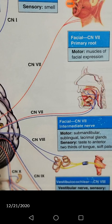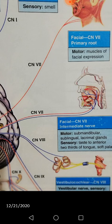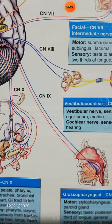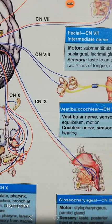The eighth cranial nerve touches your ear and is concerned with hearing and equilibrium of the head. If this nerve is injured or lesioned, there could be sensorineural hearing loss, loss of balance, and nystagmus.